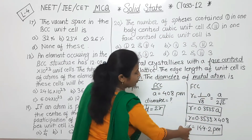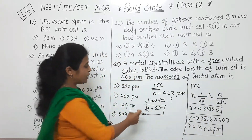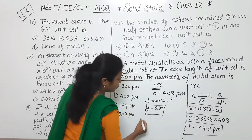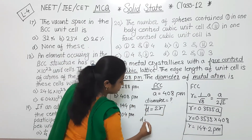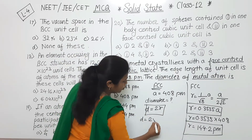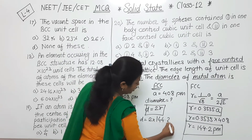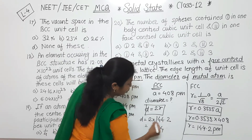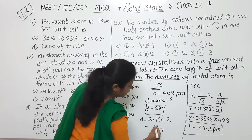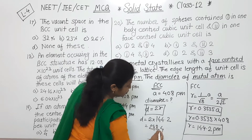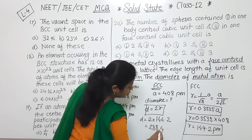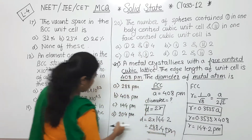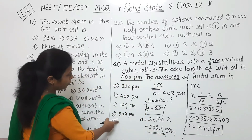So this is the radius — 144.2 picometers. Now to calculate the diameter, we simply put that radius value: D is equal to 2 into 144.2, which gives us 288.4 picometers. So if we observe the options, option A is the answer.